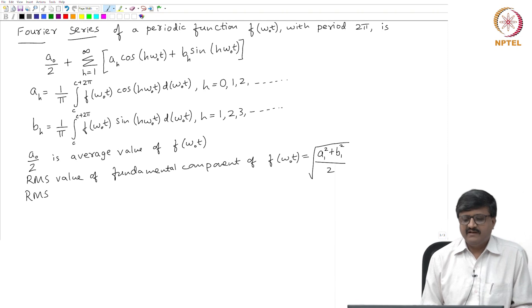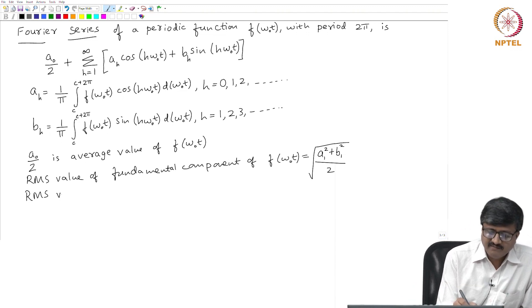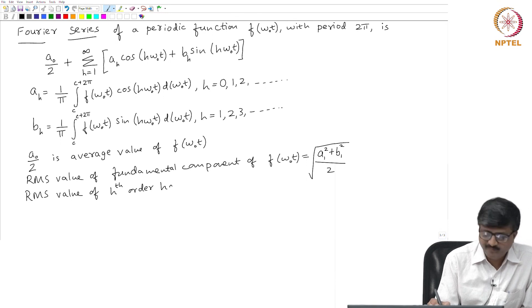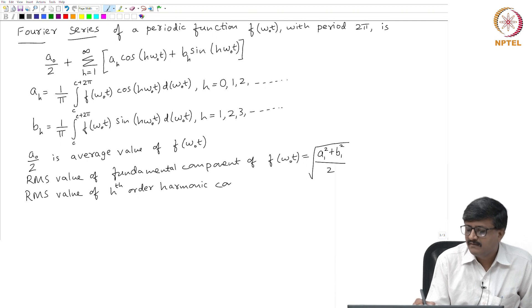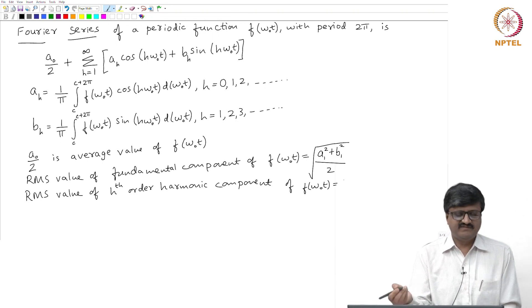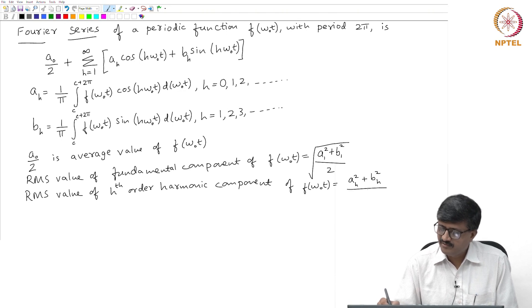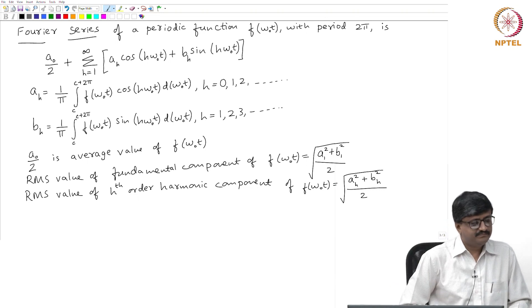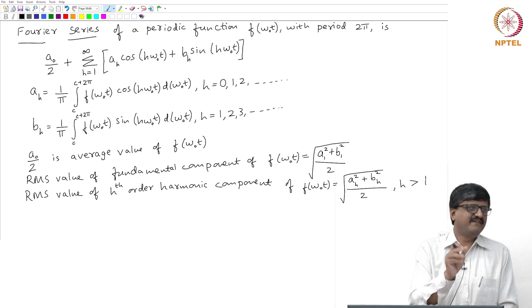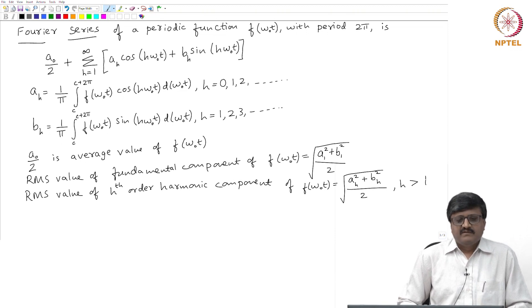Similarly, I can get even the harmonic component corresponding to h equal to 2, 3, 4, and so on. The RMS value of the hth order harmonic component of f(ωₒt) is: the square root of (aₕ² + bₕ²) / 2 — analogous to the fundamental, replacing a₁ and b₁ with aₕ and bₕ. Please note: for h equal to 1 we say fundamental; for h greater than 1 we say harmonic.